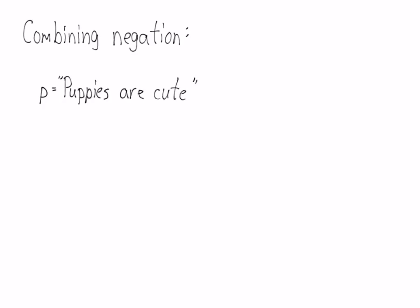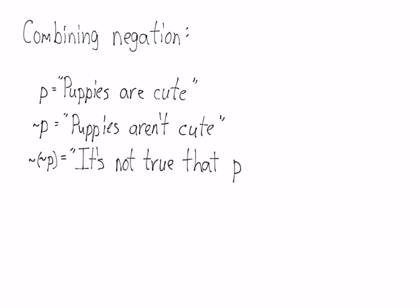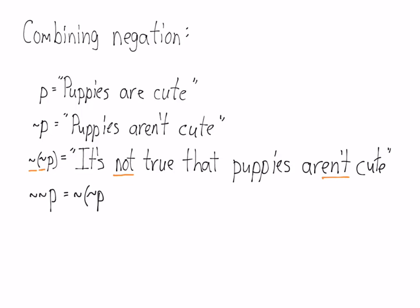First, we'll deal with combining negation. If P stands for the sentence 'puppies are cute,' then the negation of P is 'puppies aren't cute.' You can then negate that to get 'it's not true that puppies aren't cute.' Notice how, in both the logical version and the full sentence, you've got two denials. You can actually drop the bracket in this case, since it's not ambiguous.